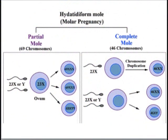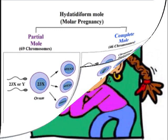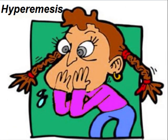There are two types: partial mole or complete mole. In partial mole, the ovum is fertilized by two sperms, so there is maternal tissue as well. In complete mole, a blighted or empty ovum is fertilized by a single sperm which then duplicates, or there are two sperms fertilizing an empty ovum.